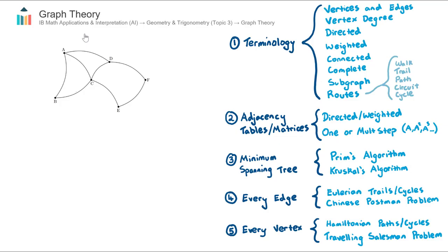In this video, we look at graph theory, which is part of the AI-HL course in Topic 3, Geometry and Trigonometry.